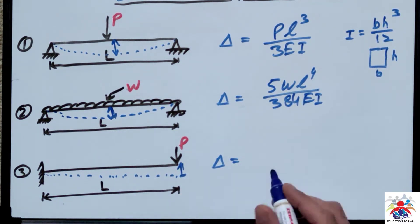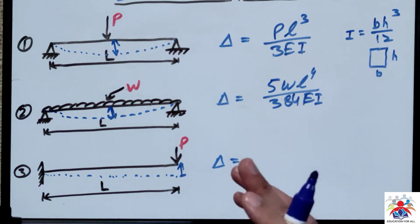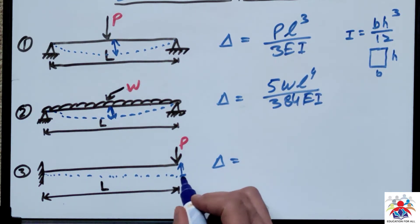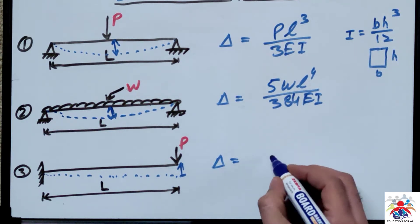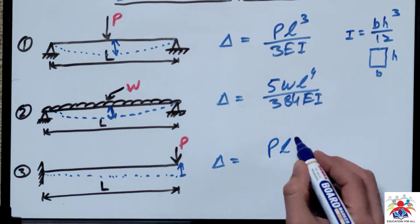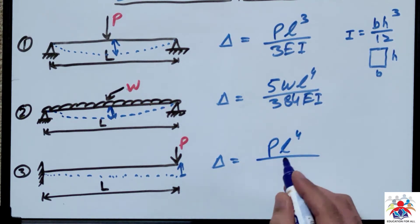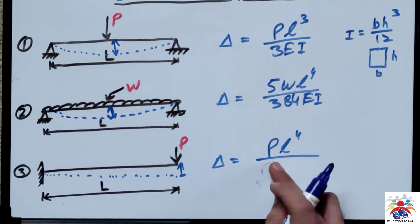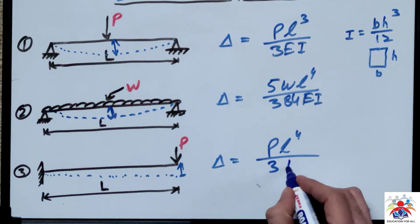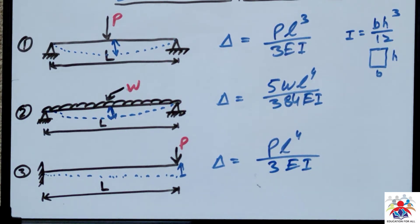The third loading condition, which is point load acting at the far end of cantilever beam. This would be P L to the fourth divided by 3 E I.